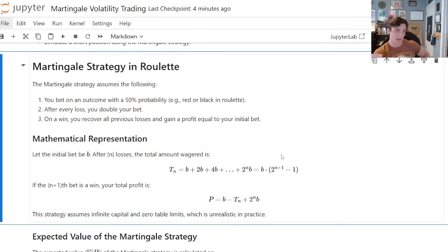Really all we're doing is every time we lose, we double down, double down, double down, depending on how much capital you got, this may or may not be a good idea. Regardless, at the N plus 1th bet, your total profit is going to be B minus T sub N plus 2 to the NB. And this strategy assumes that you have some sort of infinite capital capacity. Of course, maybe unrealistic in practice, but some people do have quite a bit of money, maybe close to infinite money. So this may be even somewhat practical for them.